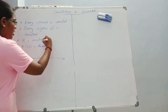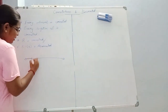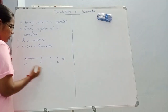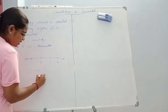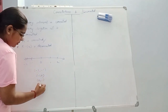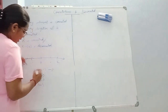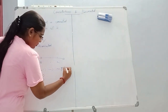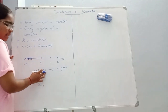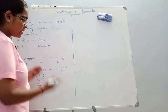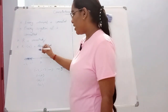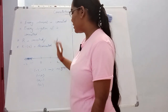Connectedness and disconnectedness — R is connected. On the real line, there are points 0, 1, 2, minus 2. Let's look at the open intervals. There are no gaps in it, so this is connected. If there is a gap, it is disconnected. If you look at the real line, there is no gap — that is why R is connected.